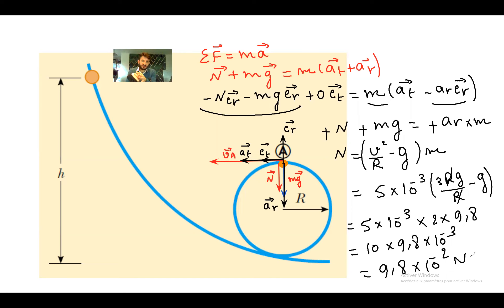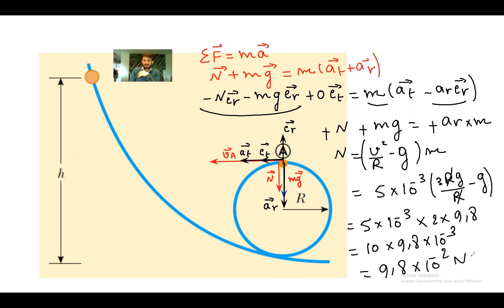That is the value of the normal reaction force along the trajectory. We could also change some given values and perform the same analysis — for example, calculating the velocity of the ball at a different point on the loop, or computing N at that position.